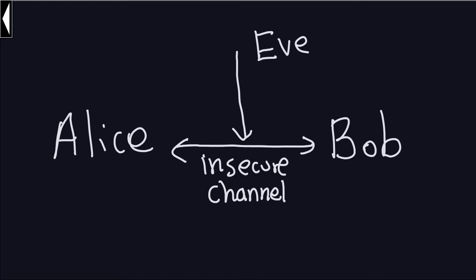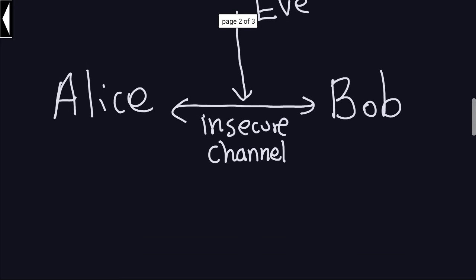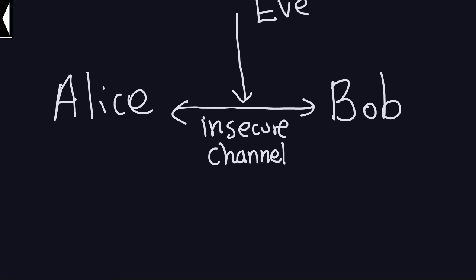Under this setup, we're going to assume that Eve can listen to the messages but cannot change the messages. That's an important assumption that we're going to talk about later. So basically, two people want to communicate through an insecure channel and another one is listening to those messages. Alice and Bob want to communicate so that Eve cannot actually understand what the messages are.